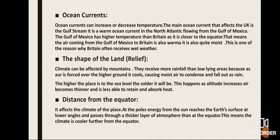The main ocean current that affects the United Kingdom is the Gulf Stream. It is a warm ocean current in the North Atlantic flowing from the Gulf of Mexico, which has a higher temperature than Britain as it is closer to the equator. This means the air coming from the Gulf of Mexico to Britain is also warm and quite moist, which is one reason why Britain often receives wet weather.